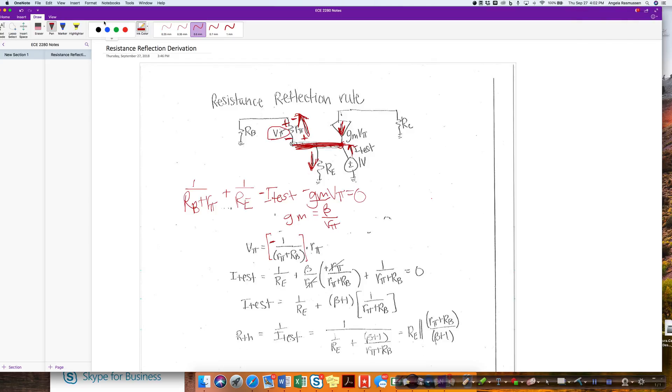I then am going to take I test and take it over to the other side. And then I have 1 over Re. And I have this quantity located here.